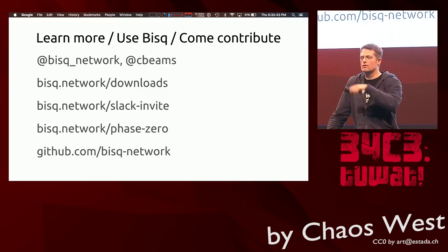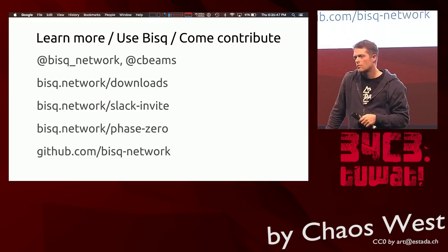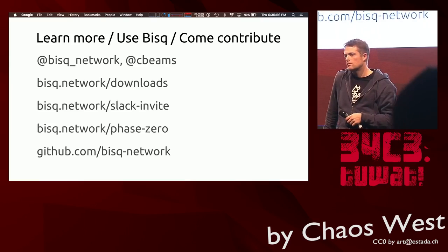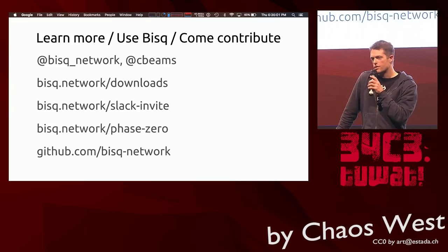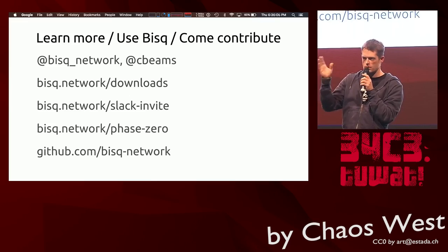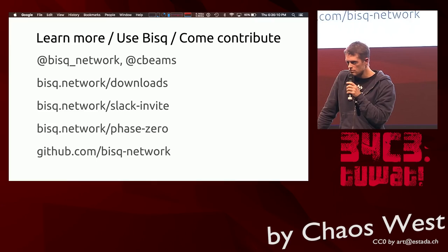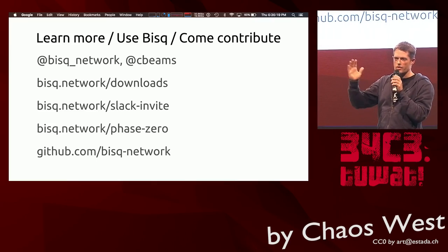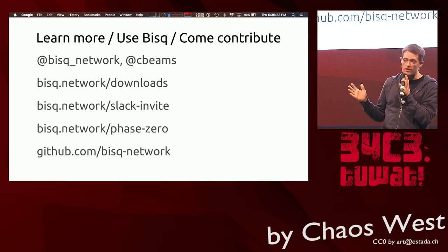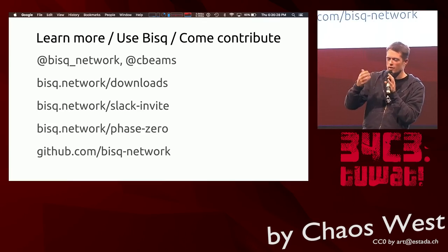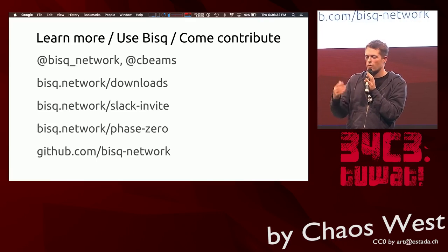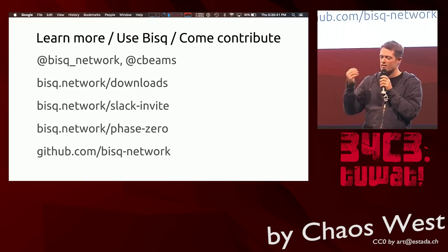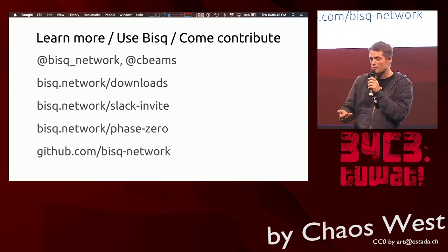Q&A: Can users define their own settlement times? For SEPA, for example, you have about eight business days of reversal risk, and the example showed five days of settlement time, which might not be enough. The settlement window for SEPA trades is fixed — the seller can't specify it — it's fixed at a certain number of days, like five days, based on what we found works well over time. SEPA regulations say eight business days, but we take a pragmatic approach: if we set it at this many days and never have problems, we keep it there; if problems start occurring, we extend it.